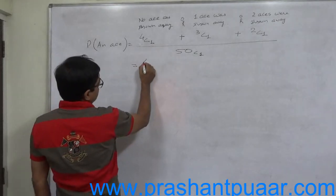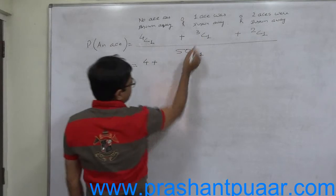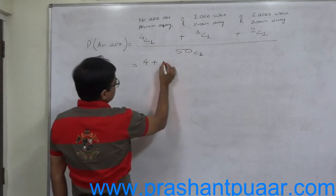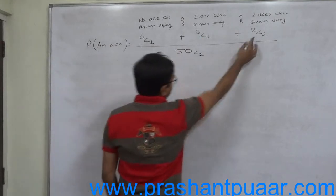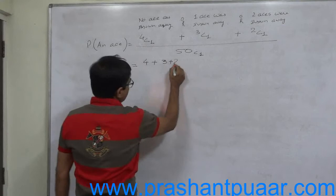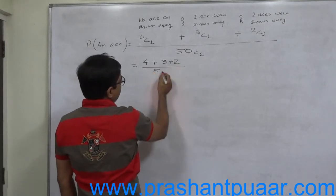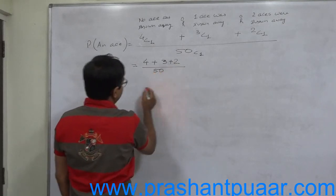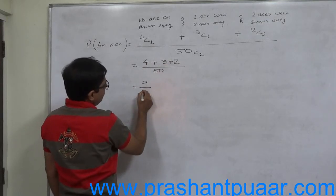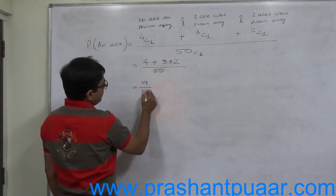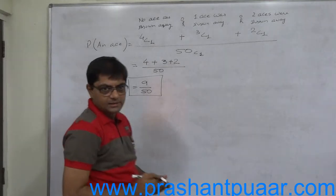4C1 gives 4, plus 3C1 gives 3, plus 2C1 gives 2, all divided by 50C1 which is 50. So 4 plus 3 plus 2 equals 9, giving a probability of 9 over 50.